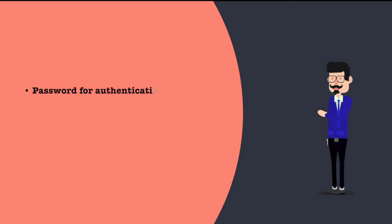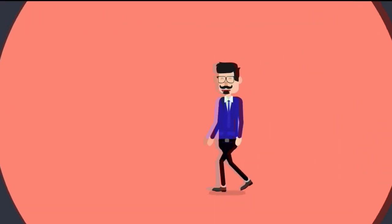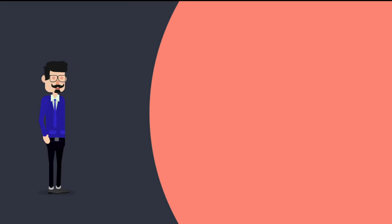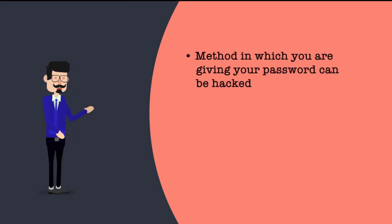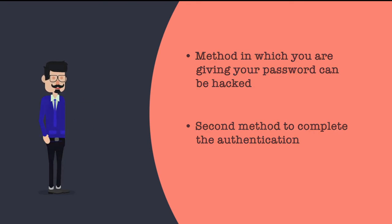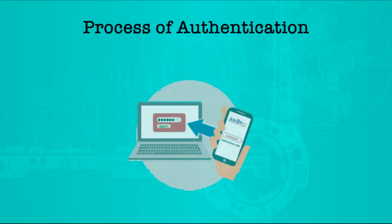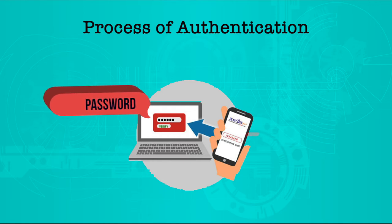When you give a password, you are authenticating with the website. When you give your username, you are identifying yourself. It may happen that the method by which you give your password can be hacked. So we need to cater to a second factor — a second medium — wherein you supply additional information to complete authentication. The process will have two steps: the first is the password, and the second is a special code delivered through a different medium.